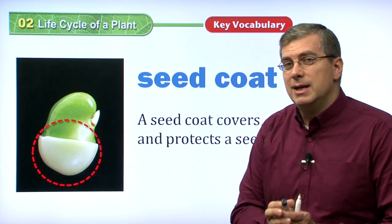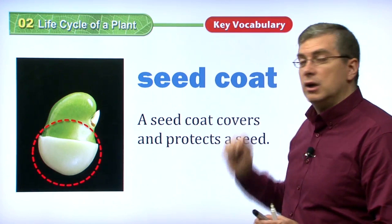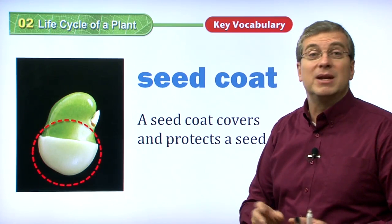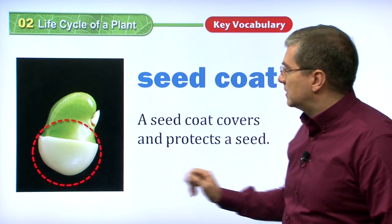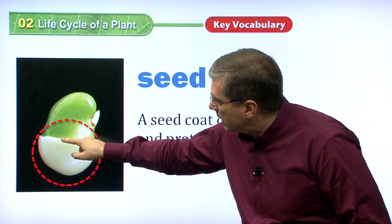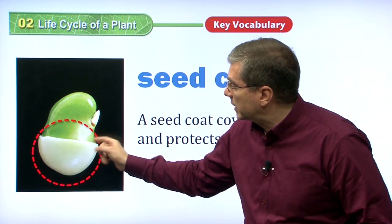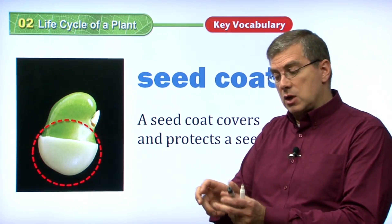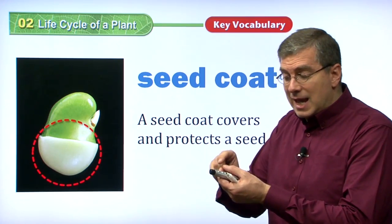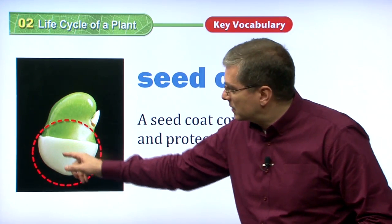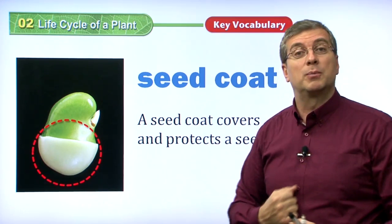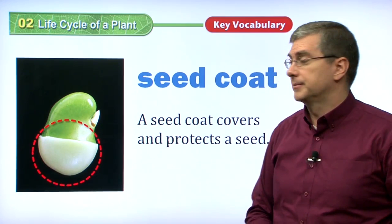It's very important that the seed is protected. The seed needs to have some kind of shell or coat around it to protect it from the elements and from insects. A seed coat covers and protects a seed. This part here is the seed coat. Normally it covers the whole seed. If you open up an apple, you've got the small dark brown seeds — that dark brown coloring is the coat of the seed. It's like you put on a coat to protect yourself.